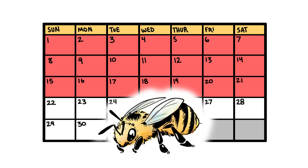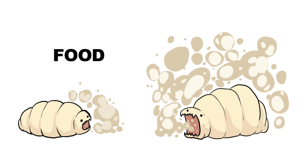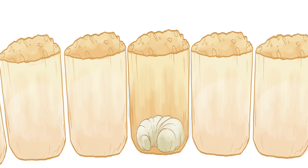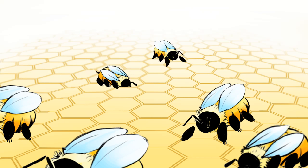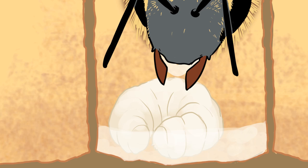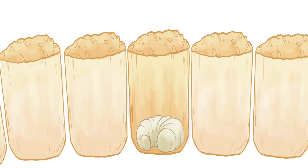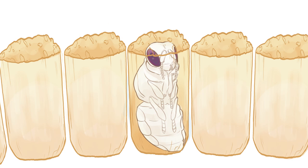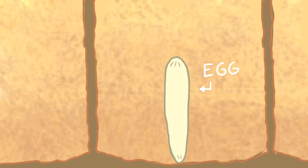The egg will hatch about three days after being laid. At this point the outer layer basically melts off and becomes food. For five days the emergent larvae will grow and feed — workers will check the larvae every 15 minutes to see if they need more food. The larvae tends to eat in spurts, so the worker will produce an excess of jelly directly onto their head, close to their mouth. Then the chamber will be capped and the larvae becomes a pupae for the remaining 13 days.